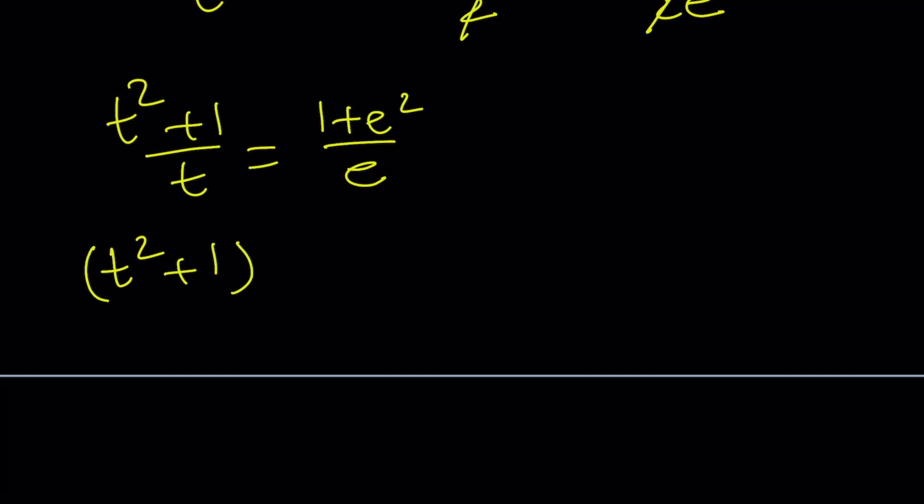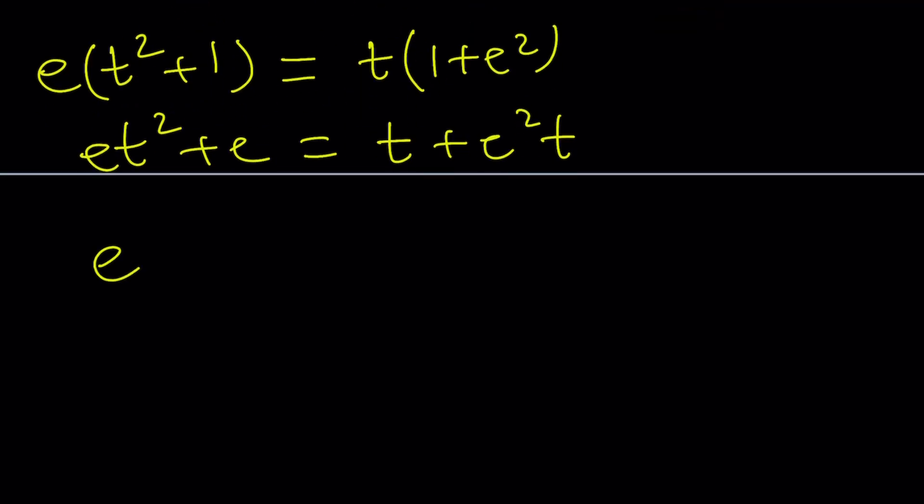So, T squared plus 1, I'm going to multiply by E, and T I'm going to multiply by 1 plus E squared. E T squared plus E equals T plus E squared T. Let's go ahead and put it all together to make a full quadratic. E T squared minus E squared plus 1 in parentheses T. Actually, I didn't need to distribute here. I could just keep it as is, but anyways. Plus E is equal to 0. There's quite a few E's here. That's okay. Those are constants.